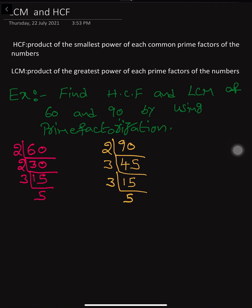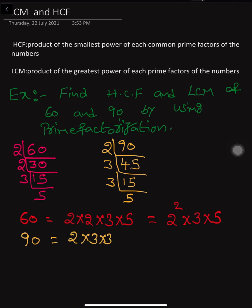So, first write 60 is equal to 2 into 2 into 3 into 5, that is equal to 2 square into 3 into 5. Now, write 90 is equal to 2 into 3 into 3 into 5, that is equal to 2 into 3 square into 5.